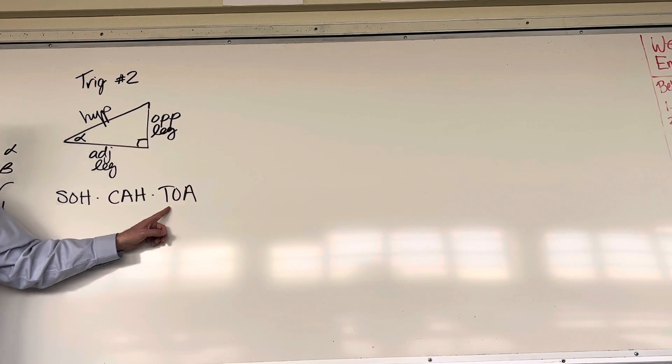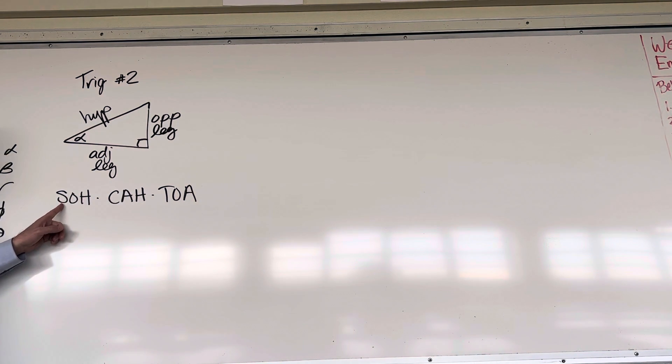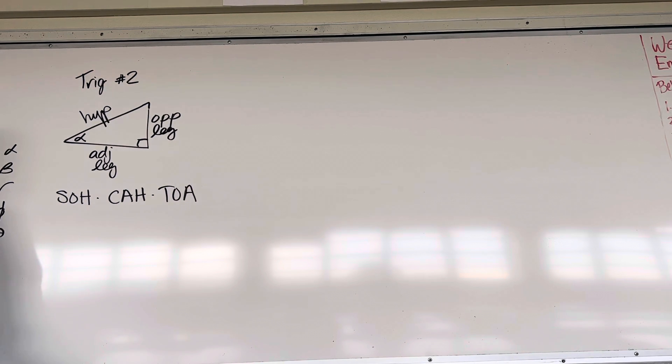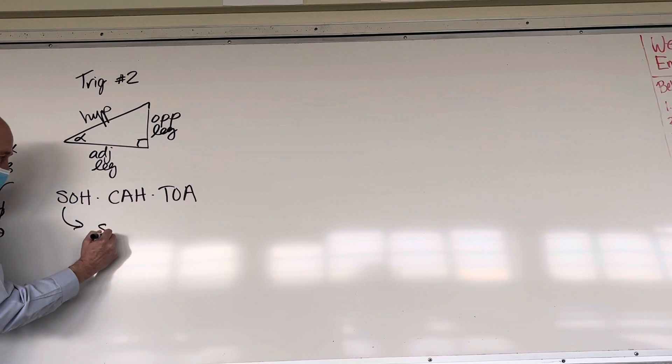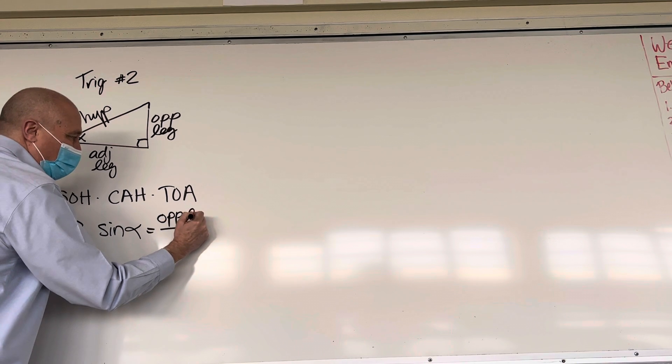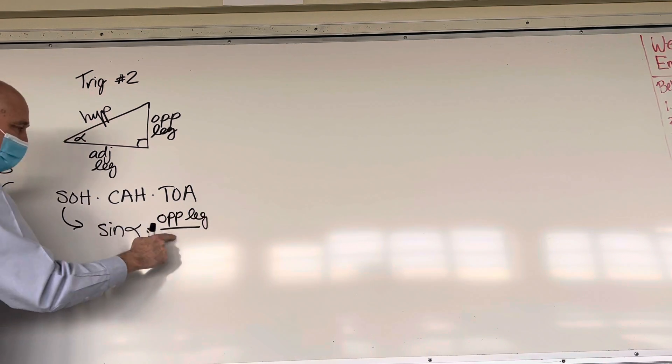These are the names of the three trig functions we'll be using this year. The secret code for sine is sine of an angle, and we're going to call it alpha because we don't know what it is, equals a fraction, the op leg, which is what the O is for, over the hyp.